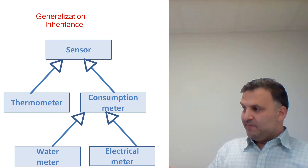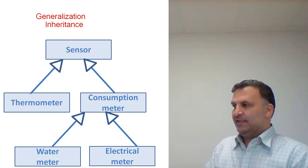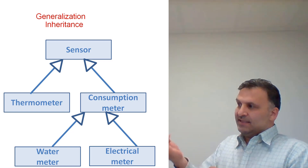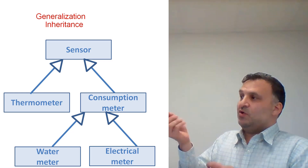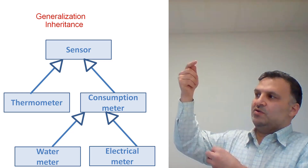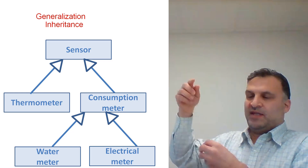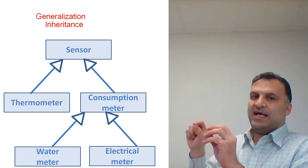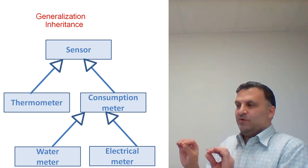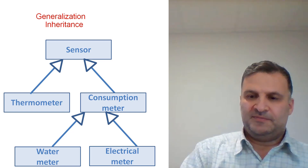Similarly, an electrical meter inherits the attributes of the consumption meter, and therefore also inherits the attributes of a sensor. We can add specific attributes each time for these more specialized sensor classes.